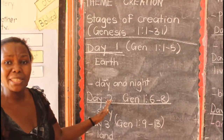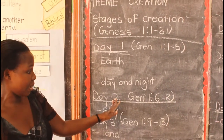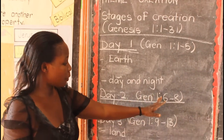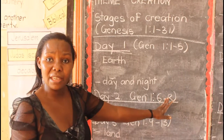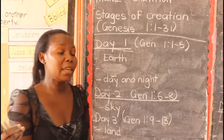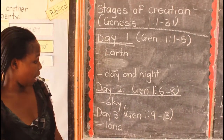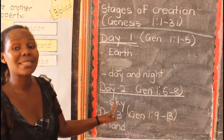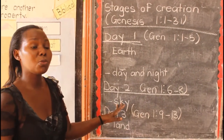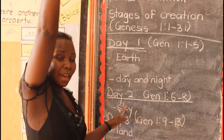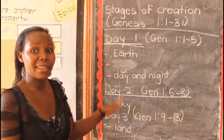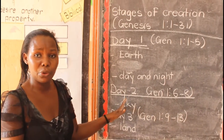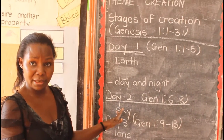On the second day, you read from verse 6 to verse 8 — still in Genesis chapter 1. On the second day, God created the firmament. The firmament is known as the sky. God created the firmament to separate the heaven and the earth. God saw that the firmament was good, and God was happy with that.